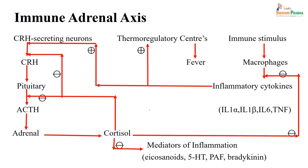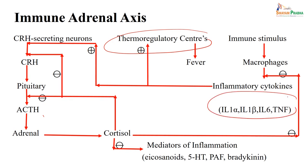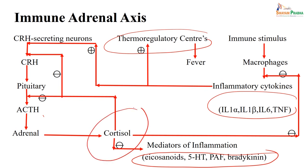It is very important to understand that when you start steroid therapy, it should not be abruptly stopped, because it will affect the hypothalamic-pituitary-adrenal axis. What you do is taper the steroid dose gradually — a tail-off. The corticotropin-releasing hormone from the hypothalamus regulates the system. These centers are regulated by thermoregulatory centers, immune stimuli from macrophages, different cytokines, and mediators of inflammation like eicosanoids, 5-HT, platelet activating factor, and bradykinin. When you start, you must remember it should not be abruptly stopped, and you need to understand the HPA axis.